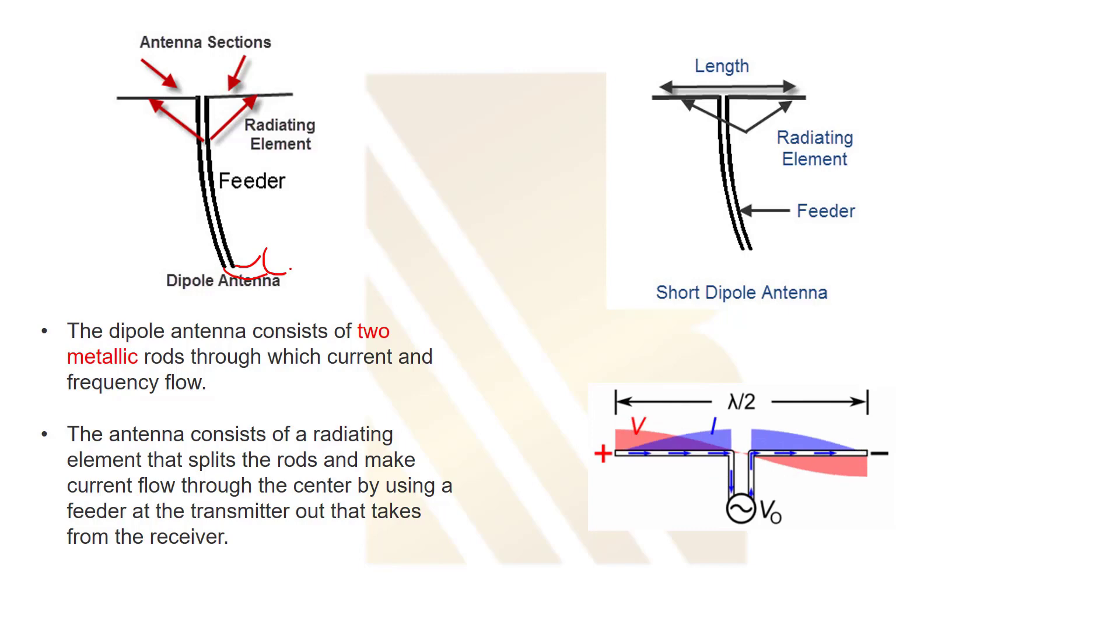This is connected to the AC source and we do radiation using these two metallic rods. When it gets positive, the current is going to the left side to the end of the line, but when it gets negative, the current will be pulled back to the AC source. As you see, the current is increasing and decreasing. It's periodic. We have radiation elements that split and make current flow through the center by using a feeder at the transmitter.